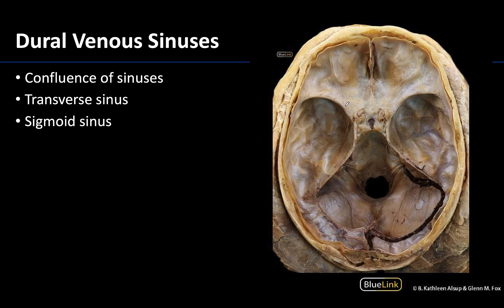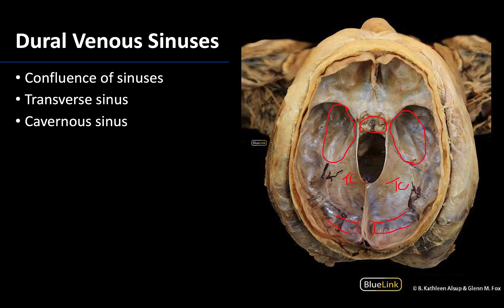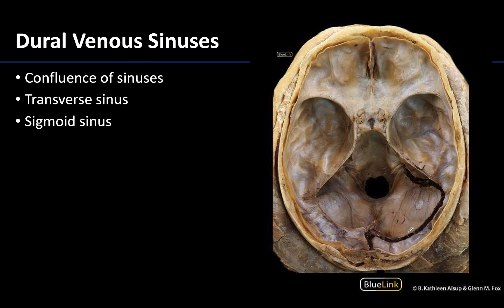In this last image, the same superior view but with the tentorium cerebelli removed, that tent-like dural partition has been taken away so we can better view some of those deeper venous sinuses, and some sinuses have been opened as well. Here is the confluence of sinuses, and you can really see how it drains into the transverse sinuses — I'm outlining the right transverse sinus here; there is a left transverse sinus as well, but the dura has not been removed on that side.